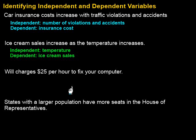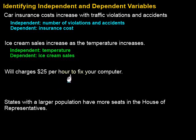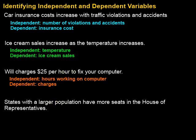What could we figure out if we know he charges $25 per hour? We could figure out how much he's going to charge us total. What do I need to know to figure out how much he's going to charge us? I need to know how many hours he worked. So what's in control — are the overall charges in control, or are the number of hours worked in control? We would need the number of hours he worked to determine the total cost for fixing the computer. So the number of hours is the independent variable and the total charges are the dependent variable.